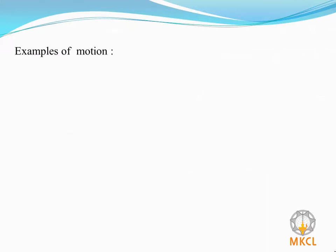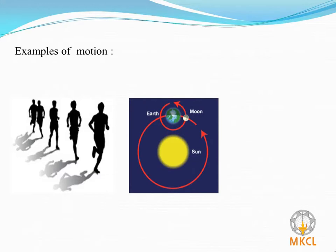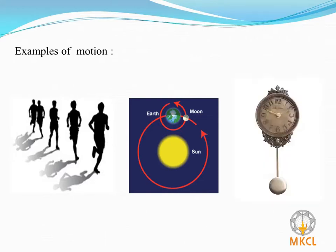Let us see some examples of motion. An athlete is running on the ground. Earth is continuously moving around the sun and moon is continuously moving around the earth. Next example is of a pendulum of a clock. Pendulum of a clock is always moving.